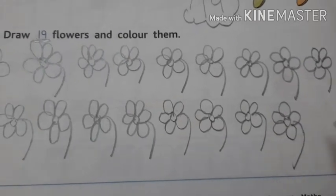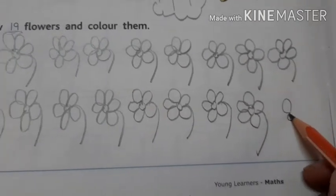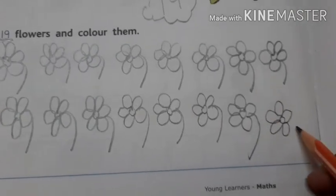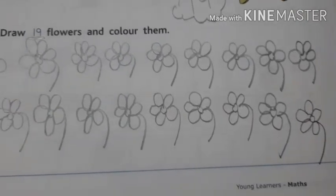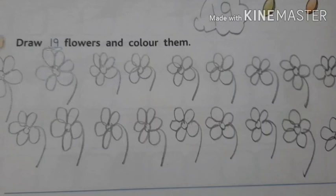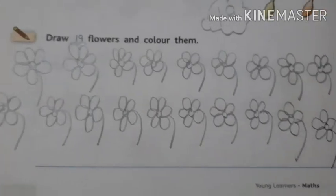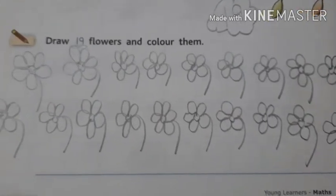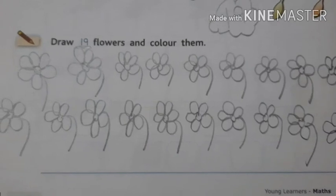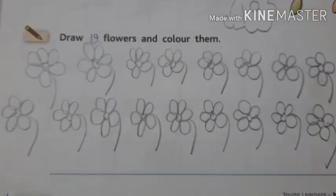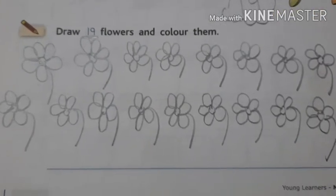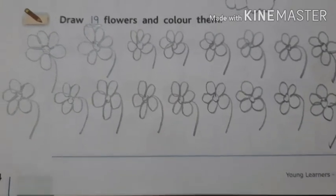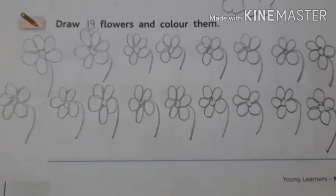Then last, 19. So here you see, we draw 19 flowers. We draw 19 flowers. Now, what you do, you just color on 19 flowers which you draw on here.